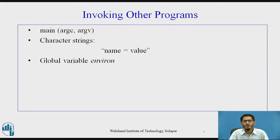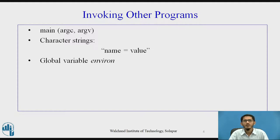When a program uses command-line parameters as in main(int argc, argv), the array argv is a copy of the argv parameter to exec. The character strings in the environment are of the form name=value and may contain useful information for programs such as the user's home directory and a path of directories to search for executable programs. Processes can access their environment via the global variable environ, initialized by the C startup routine.